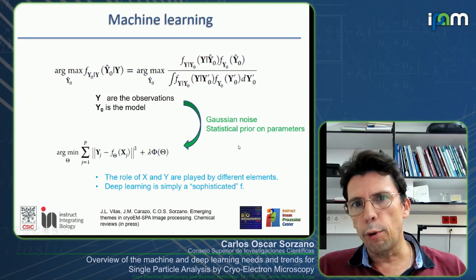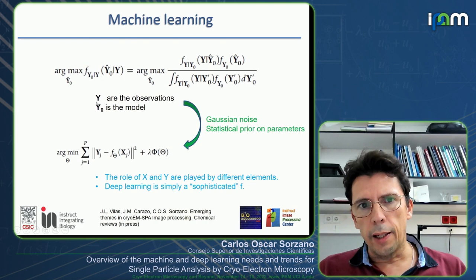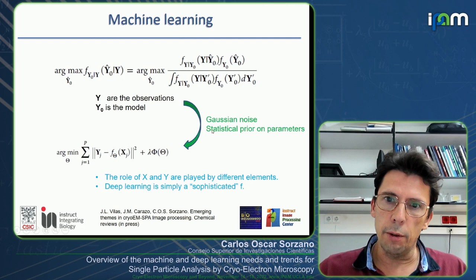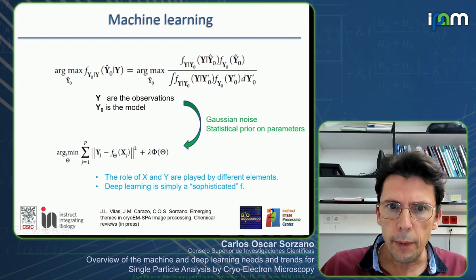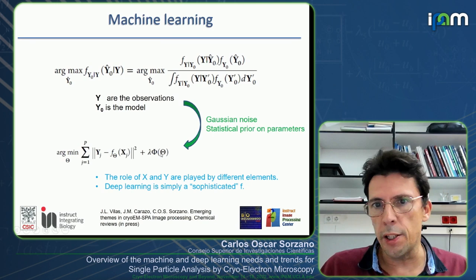Regarding machine learning, the most general formulation is the Bayesian formulation. Here, the f are the probability density functions, y are observations, and y-not are the models. Once you specify a distribution for the noise — typically Gaussian — and a statistical prior on the parameters, you arrive at the minimization of some consistency term plus some regularization.